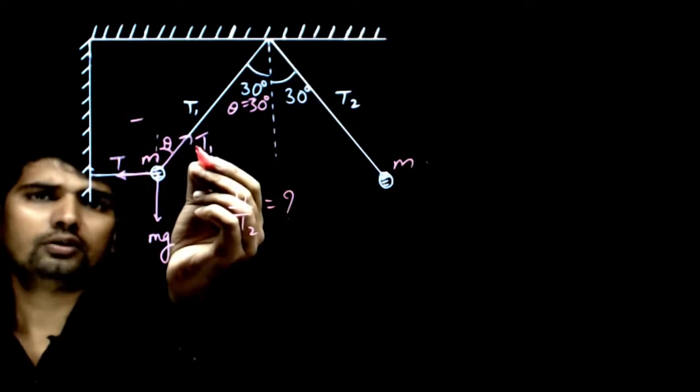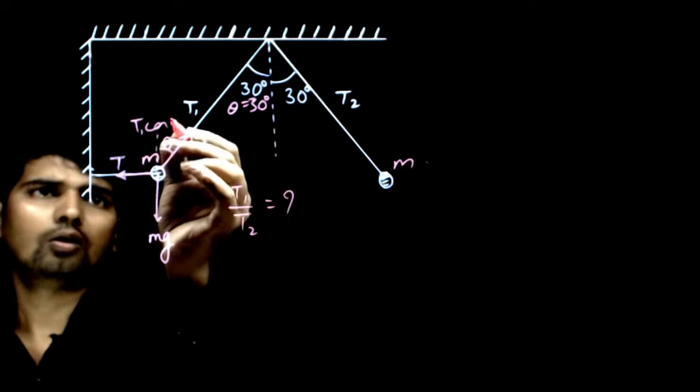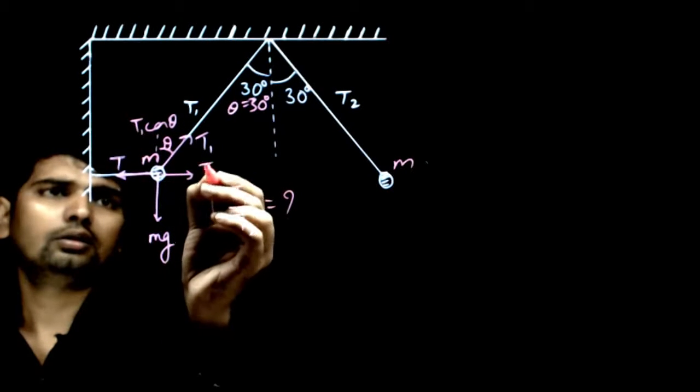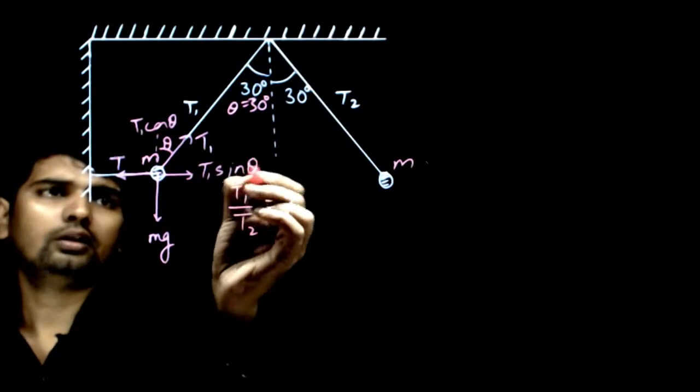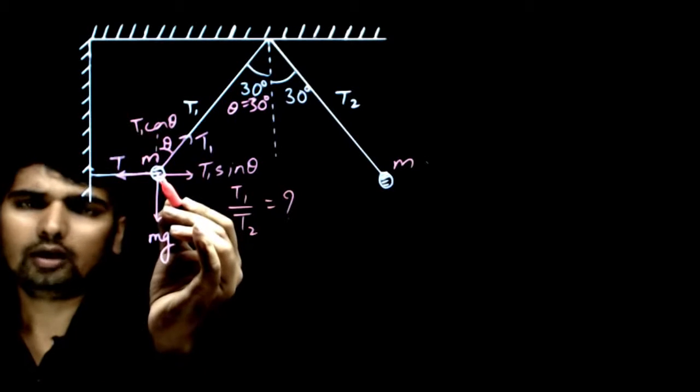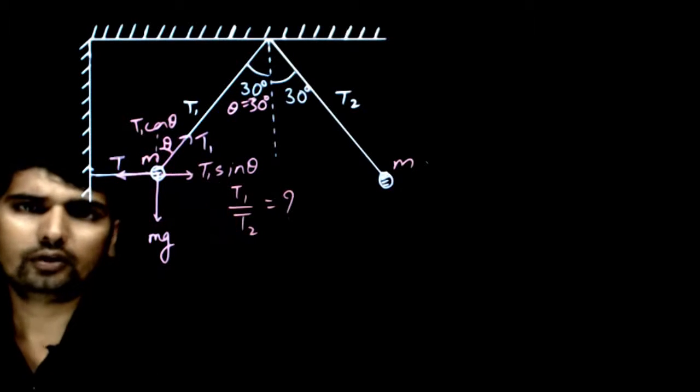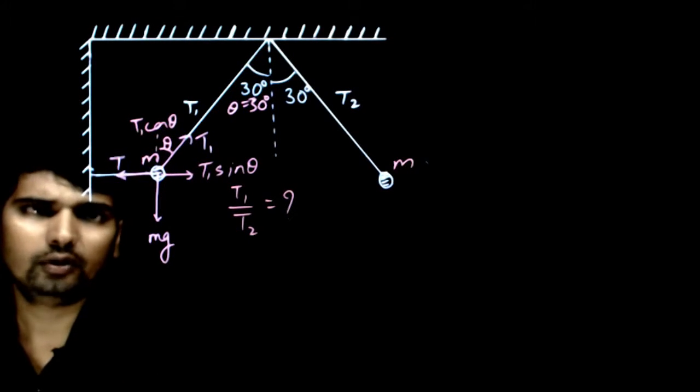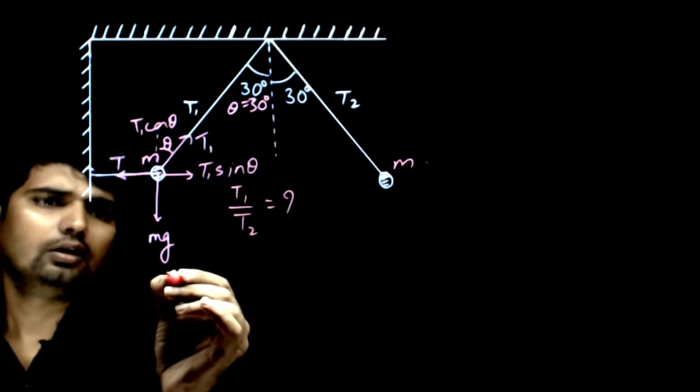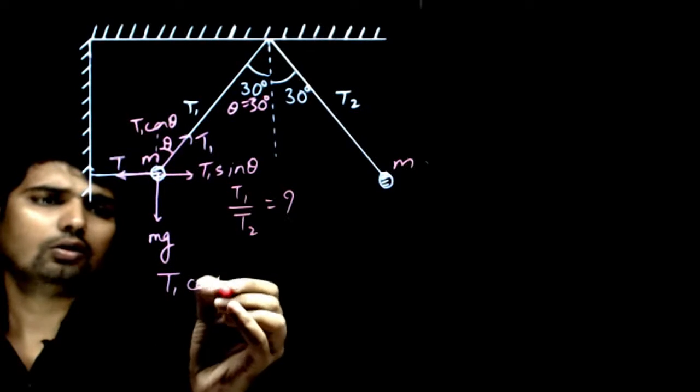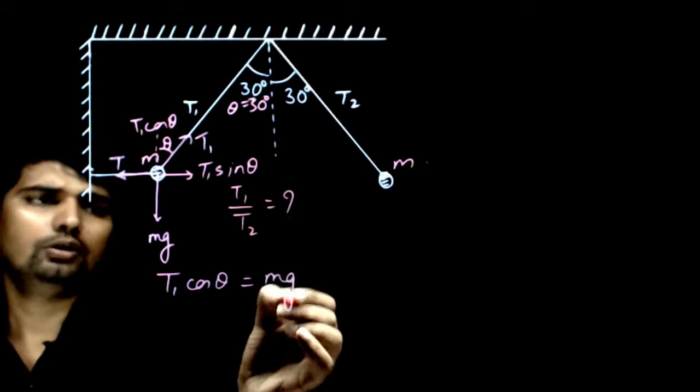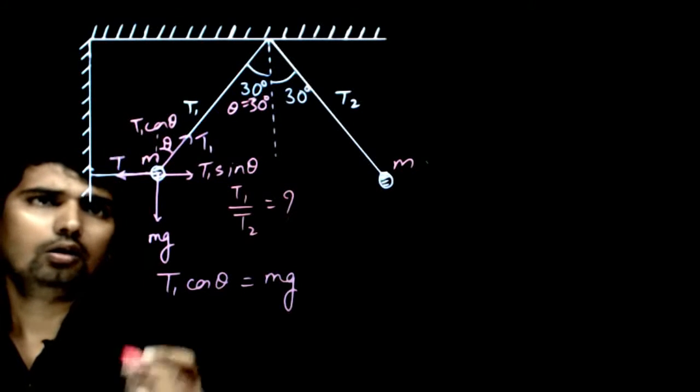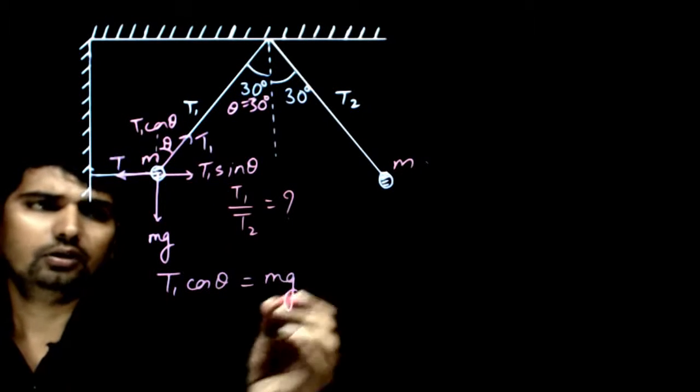The component of this tension is T1 cos theta and in this direction T1 sin theta. This ball cannot move, so if I write the equation in vertical direction, the equation for equilibrium, I will have T1 cos theta is equal to Mg. T1 cos theta is balancing Mg, this is equation 1.